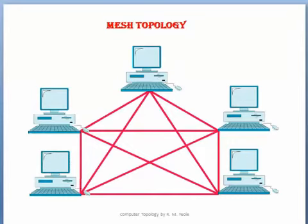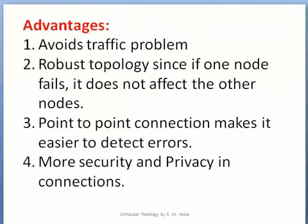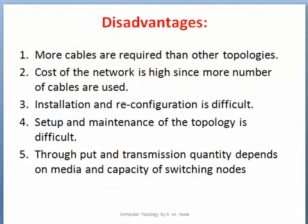In mesh topology, every single device is connected to another device with the help of a separate cable, which avoids the problem of traffic congestion. Advantages: it avoids traffic problems, it is a robust topology where if one node fails the others are not affected, point-to-point connection makes it easier to detect errors, and there is more security and privacy. Disadvantages: more cables are required, the cost is high, installation and reconfiguration is difficult, setup and maintenance is difficult, and throughput depends on the media and capacity of switching nodes.